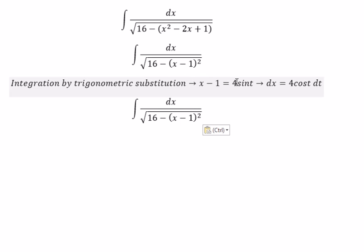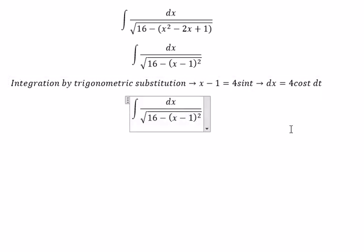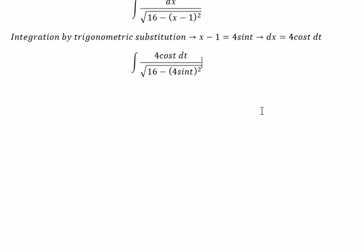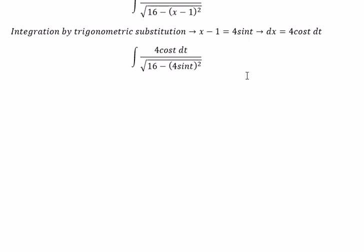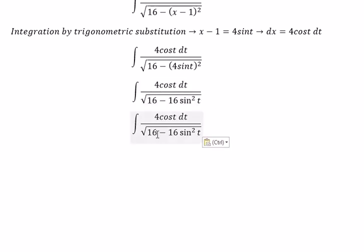So we put this one in here, and this one we change for dx. So we got 4 cos t dt. The square root of number 16, you got number 4 outside.